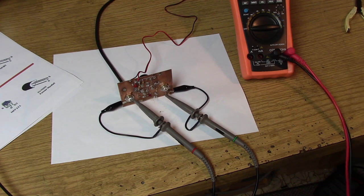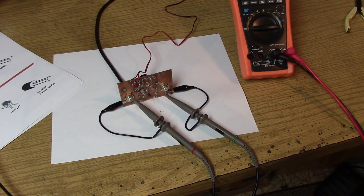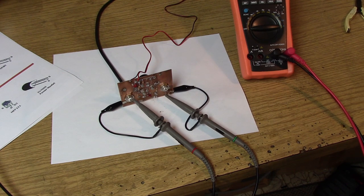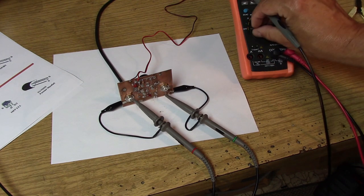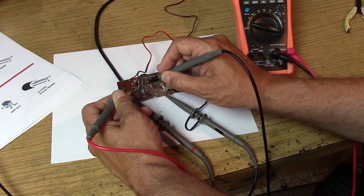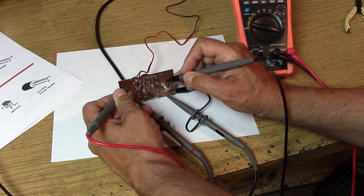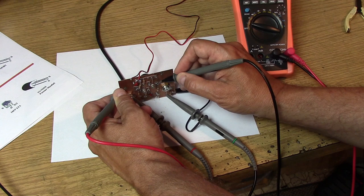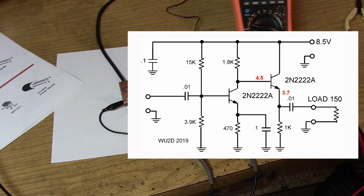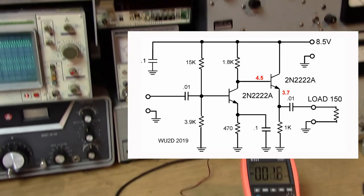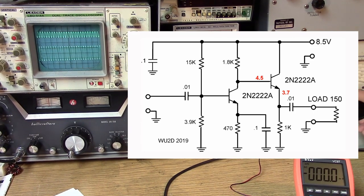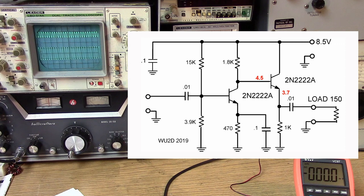I've simply tacked on a 2N2222 emitter follower. It's got a 1K load resistor in the emitter. You would imagine that the voltage would come down off our 4 volts to 3.8 volts. What I'm seeing is the addition of the emitter follower definitely extends the frequency so that 3 dB point is way out around 7 MHz now.